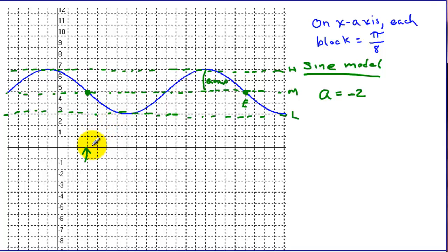To find our period, we need to find our distance from our starting to the endpoint. We have 1, 2, 3, 4, 5, 6, 7, 8, 9, 10, 11, 12, 13, 14, 15, 16 blocks. I told you over here, each block is π over 8. So 16 times π over 8 is 2π. Our period is 2π.